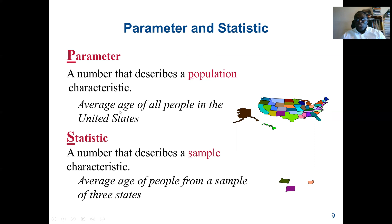Average age of all people in the United States would be a parameter because we are referring to the population, describing the characteristics of a population - the characteristic being their age. In computer science, we may use the term variable, or also the term field, like database field or attributes. A parameter describes population characteristics; a statistic describes sample characteristics.